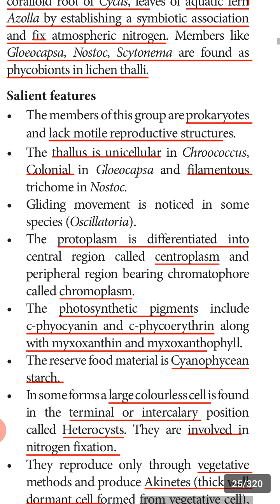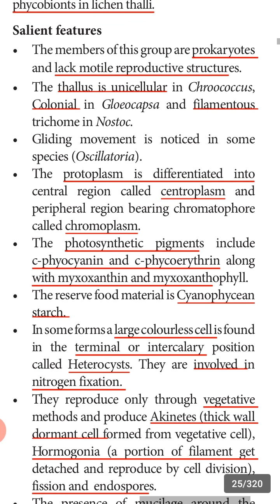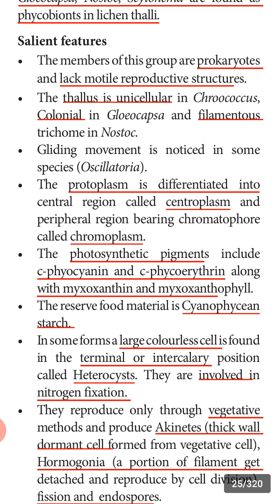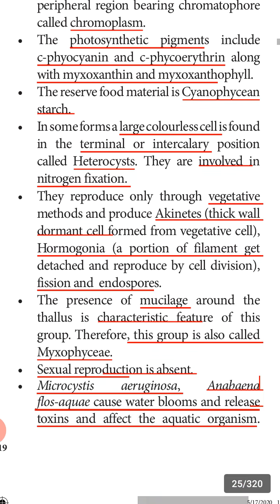The salient features of cyanobacteria: members are prokaryotes and lack motile reproductive structures. The thallus is unicellular, colonial, or filamentous. Unicellular example is Chroococcus, colonial example is Gloeocapsa, and filamentous structure is seen in Nostoc.